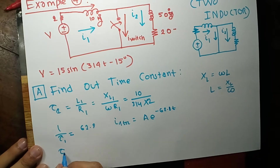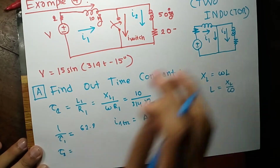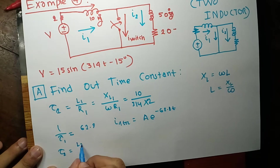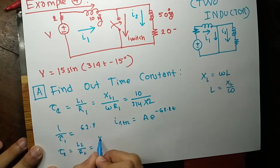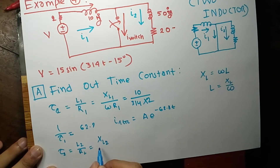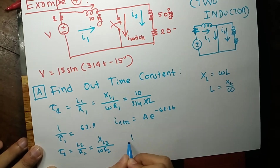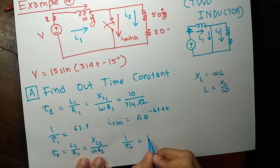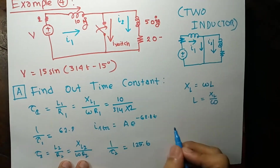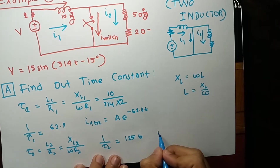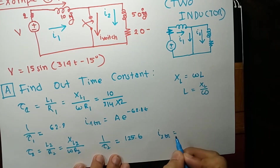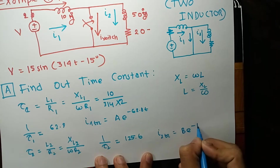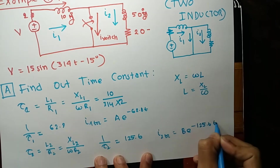For τ₂, the transient time constant for the second current, that will be L2 over R2, again XL2 / (ω · R2). And 1/τ₂ will have value 125.6 if you put in the values. So the transient portion for the second current will be B·e^(−125.6t).